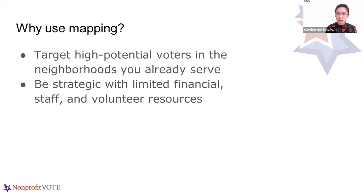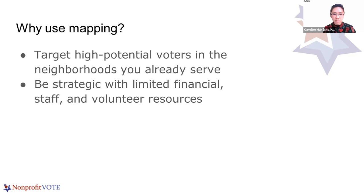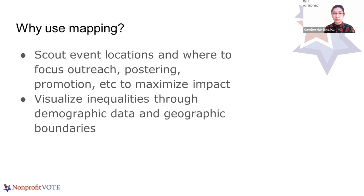High potential voters are also the ones most left out of the process. In the neighborhoods you serve, mapping can identify and locate more voters in areas where your name might already be trusted, or where you may already have knowledge that traditional campaigns might not. Voter and civic engagement is also about empowering communities — organizing in a specific area can help them have more clout when elected officials see their area is voting at higher rates. With limited financial and manpower resources, mapping can help us do that equitably by looking at demographics, turnout, event locations, and partnerships.